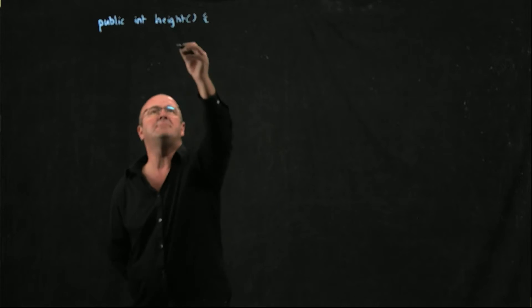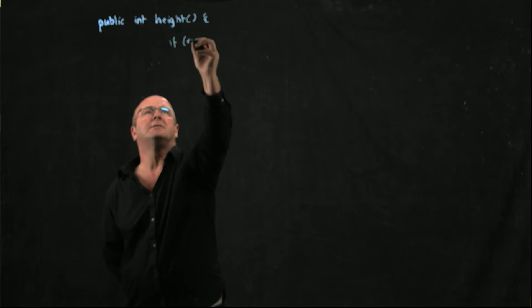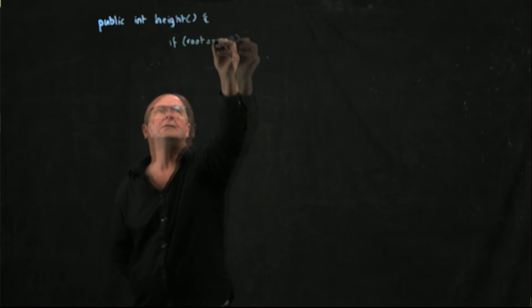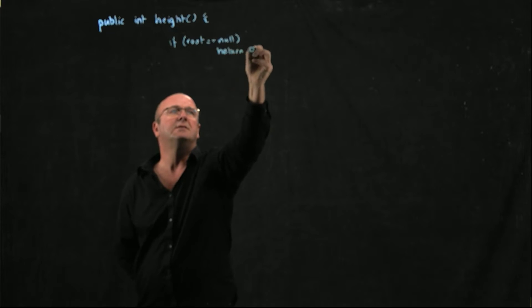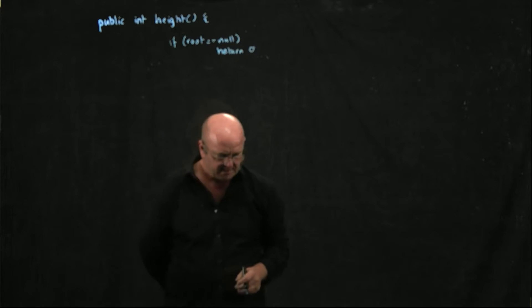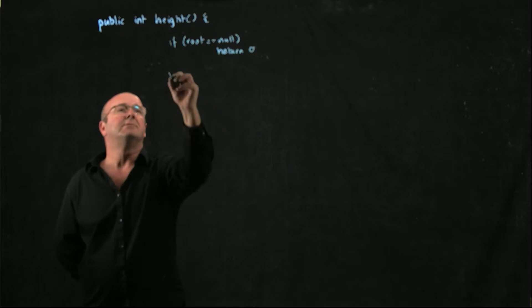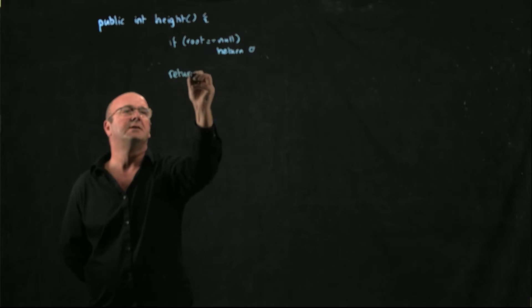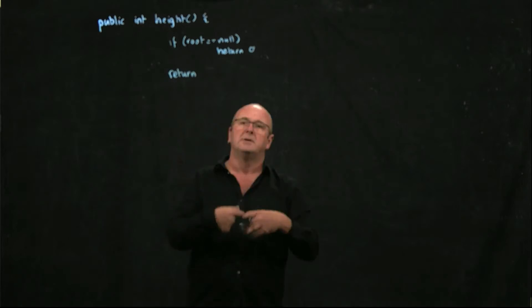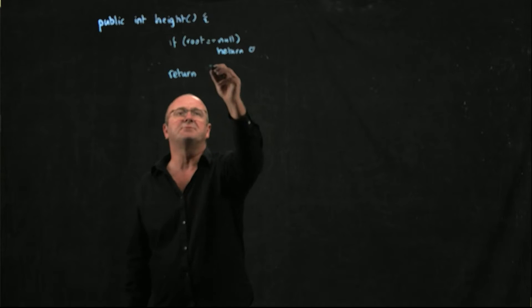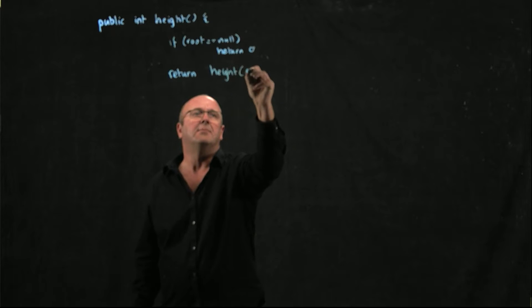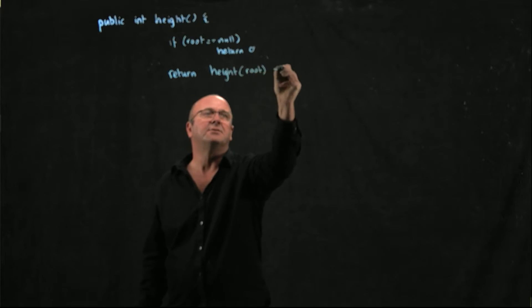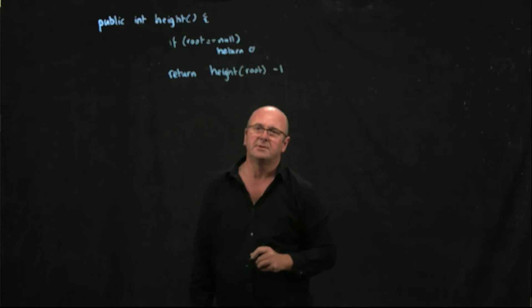And so if we have an empty tree, so if root is equal to null, our height, we return 0. Otherwise, we're just going to return the height of the tree, and in fact, we're just going to subtract 1 from that, and you'll see why we subtract 1 in just a second. So return the height of the root minus 1.